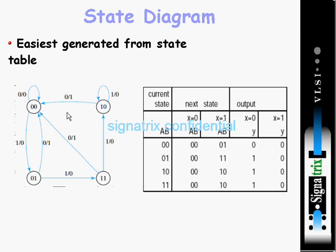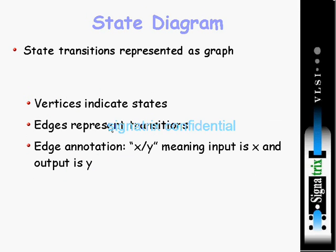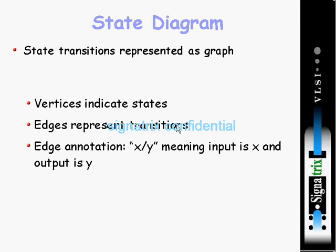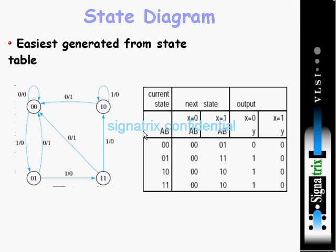If you see that state diagram - this is state 00, 10, 11, 01. These are the states. Edges represent the transitions. See, there is one transition from 00 to 01. When input 1 comes, during that time your state is changing to 01. So this is the transition.